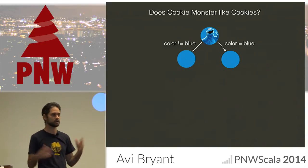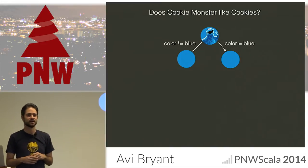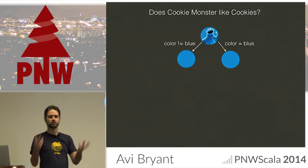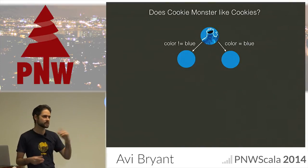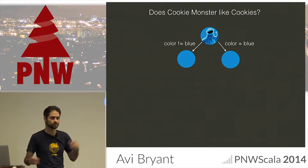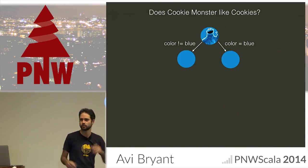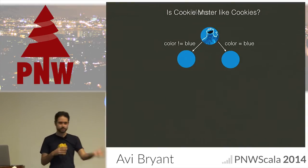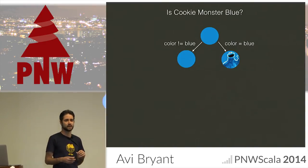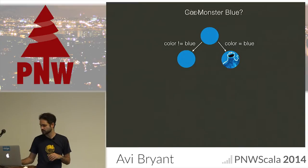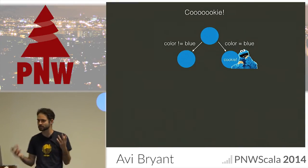Let's say you have some observation — Cookie Monster — and you want to know, does it like cookies? You start at the root, and every node in the tree is going to have some kind of predicate that operates on these features. In this case, let's take the color feature and ask: is it blue? If it is blue, we walk the tree this way; if it isn't blue, we walk the tree that way. Cookie Monster is blue, so we go into that node. Now we're in a leaf node, and the predictions are in the leaves. We look at the prediction in this particular leaf node, and yes — Cookie Monster does like cookies.